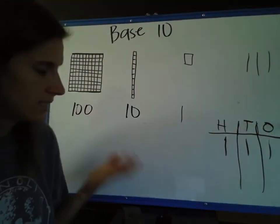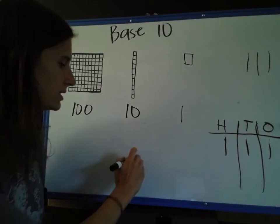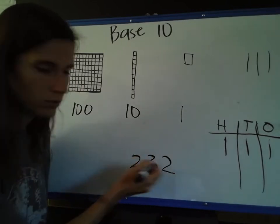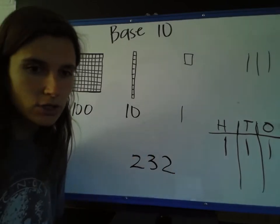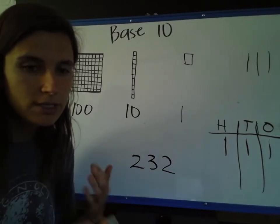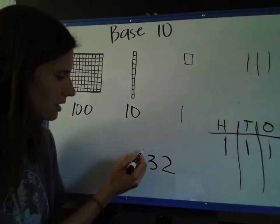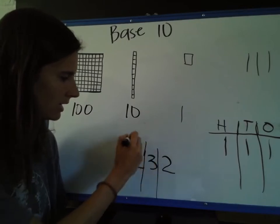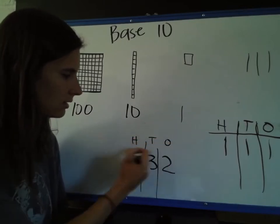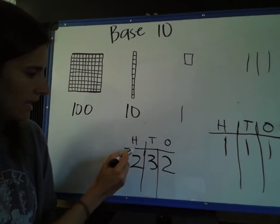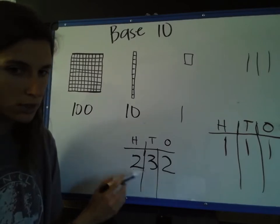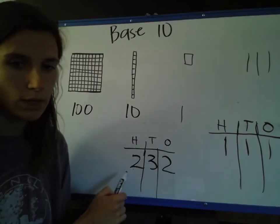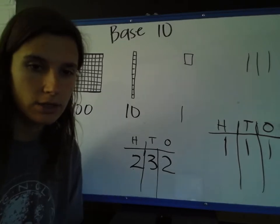So if we see a number — for example, if we see 232 — we can use our hundreds chart to figure out how many hundreds, how many tens, and how many ones. So I would just divide my number up. I know that these are hundreds, tens, and ones. So I have two hundreds, three tens, and two ones in my number 232.